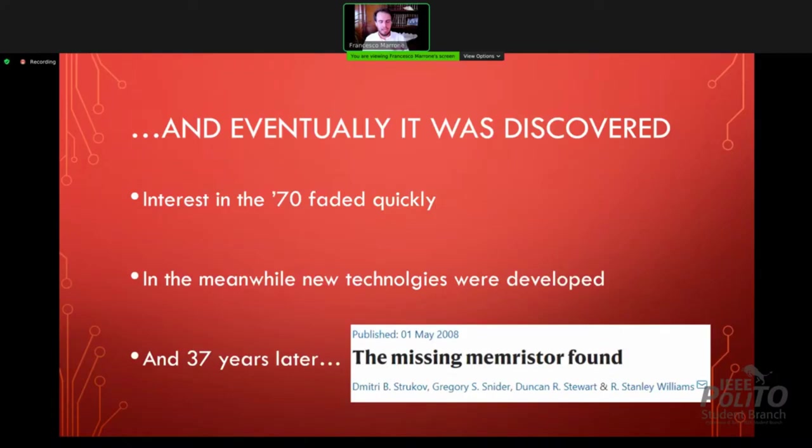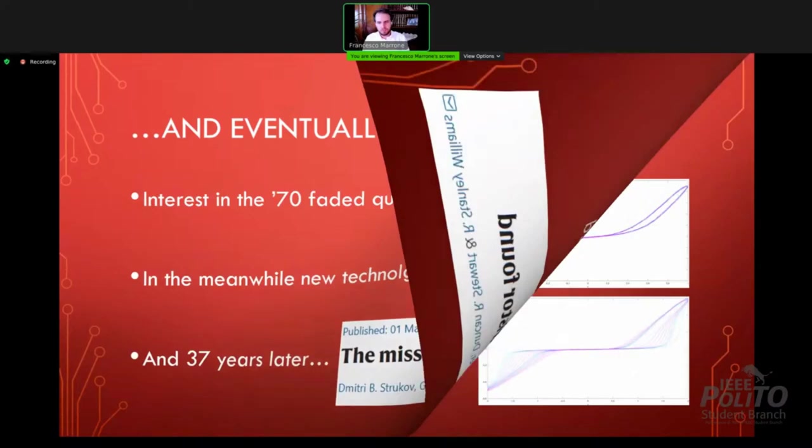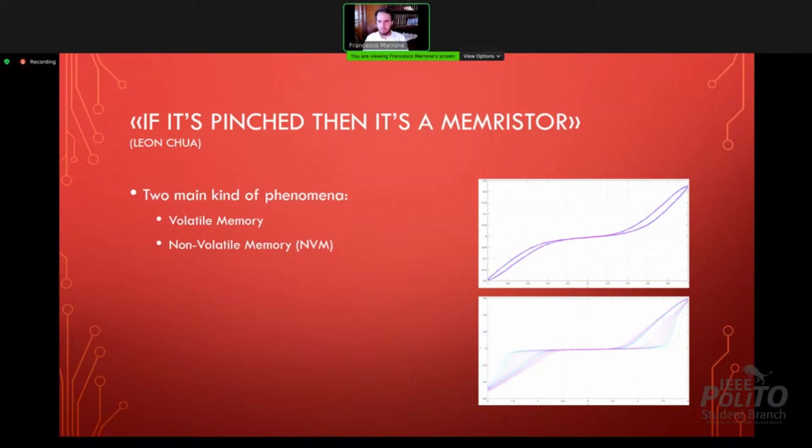So let's see some memristive experimentally acquired characteristics. Those are measurements taken for triangular waves on PCM cells, phase change memory. And we can immediately notice that there are two kinds of phenomena. One is the volatile memory, which means that you have a sort of resistive switching, which means that the resistance of the device goes from low to high, but then this effect fades away. This means that a sort of leaky integrator exists inside the device which makes it lose its memory state. And then on the other hand, we have non-volatile memory which can be observed concurrently inside the same devices.